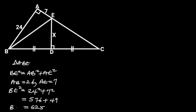So BE squared is equal to 625. Taking the square root of both sides will give us BE is equal to 25.